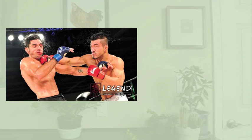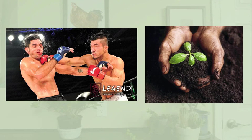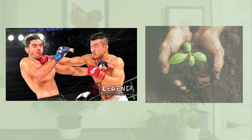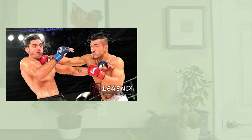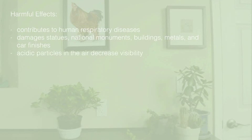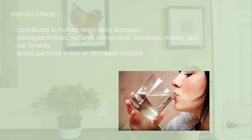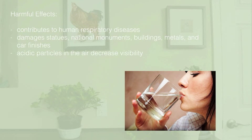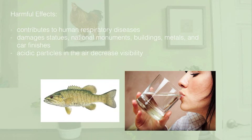To combat this problem, some soils contain basic compounds such as calcium carbonate or limestone that can react with and neutralize or buffer some of these acids. The areas most sensitive to acid deposition are those with thin, acidic soils that provide no such natural buffering, and those where the buffering capacity of soils has been depleted by decades of acid deposition. Acid deposition contributes to human respiratory diseases and damages statues, national monuments, buildings, metals, and car finishes. Acidic particles in the air can also decrease visibility. One of the most alarming effects is that acid deposition can leach toxic metals such as lead and mercury from soils and rocks into lakes used as sources of drinking water, where they can accumulate in the tissues of fish eaten by people, other mammals, and birds.